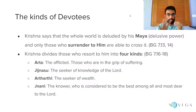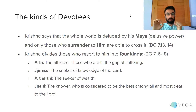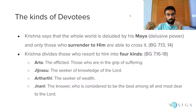The next topic — and an important one from the point of view of the net exam — is the kinds of devotees that Krishna speaks of. Krishna says the whole world is deluded by his Maya, and only those who surrender to him are able to cross it. Those who do not take refuge in him are considered unrighteous and are a ruined lot with no salvation. Those who do surrender are considered righteous — Sukritinaha — and these good, righteous devotees are of four kinds.